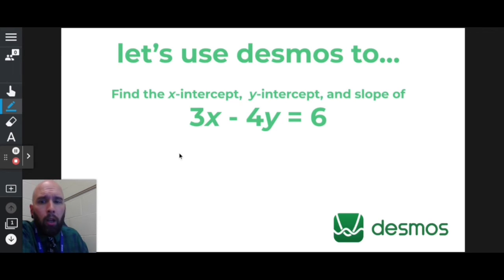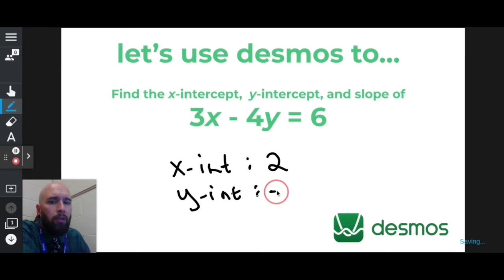So let's write that out. Looks like the x-intercept was 2, the y-intercept was negative 1.5, and the slope was positive 3 over 4. Let me write that out right here. Easy.